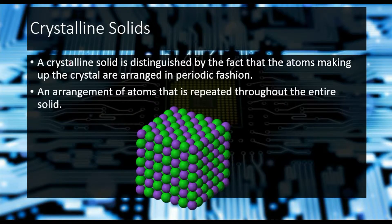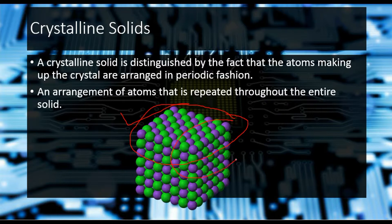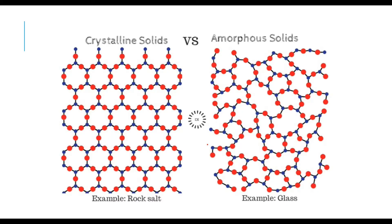Crystalline solids are distinguished by the fact that the atoms making up the crystal are arranged in periodic fashion. As you can see in the figure, all the atoms are arranged in a sophisticated and periodic fashion, so this is a crystalline structure. An arrangement of atoms that is repeated throughout the entire solid. You can see a pattern here, so all the arrangement is repeated.